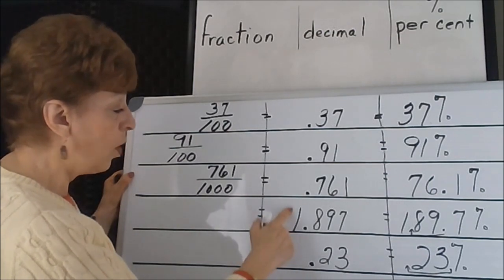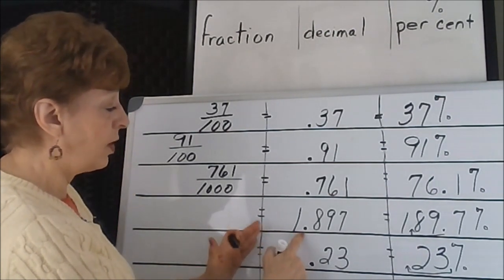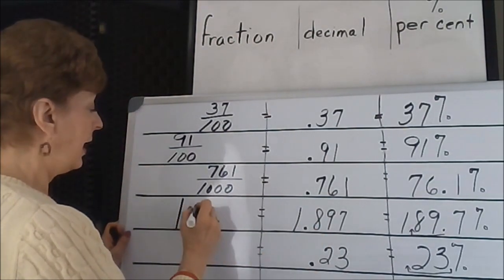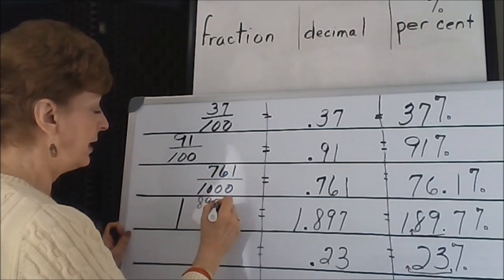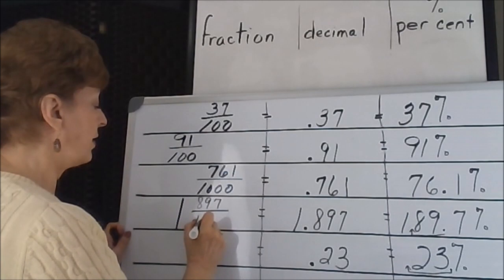In this case, we have a whole number. It's on the whole number side of the decimal point, so we're just going to put a 1 down here. 897 is our numerator. The 7 is in the thousands column, so 1 897/1000.